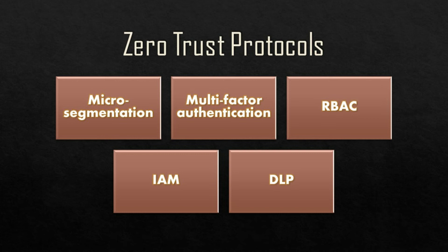RBAC, or role-based access control, is a way to give users specific access and permit them to work with data within the network. Its main goal is to limit access in the event of a breach. This goes back to least privilege—it gives only the permission needed to perform specified tasks, ultimately limiting the attack surface.